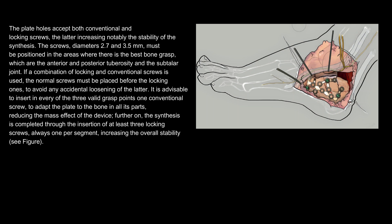The plate holes accept both conventional and locking screws, the latter increasing notably the stability of the synthesis. The screws — diameters 2.7 and 3.5 mm — must be positioned in the areas of best bone grasp: the anterior and posterior tuberosity and the subtalar joint. If a combination of locking and conventional screws is used, the normal screws must be placed before the locking ones to avoid accidental loosening. It is advisable to insert one conventional screw in each of the three valid grasp points to adapt the plate to the bone in all its parts, reducing the mass effect of the device.